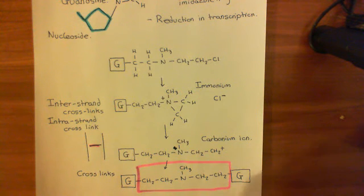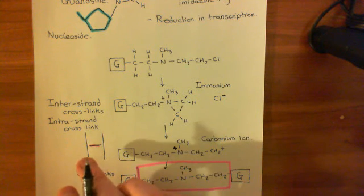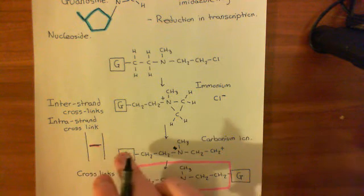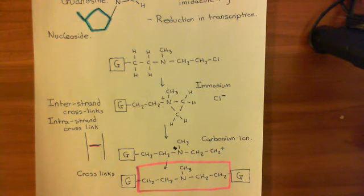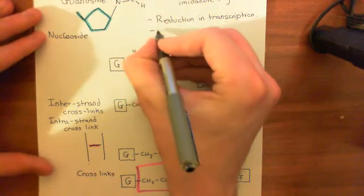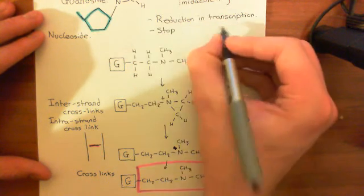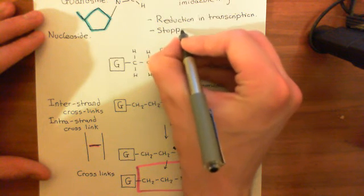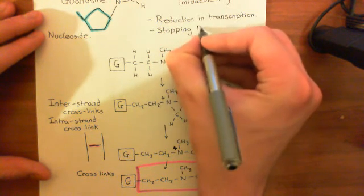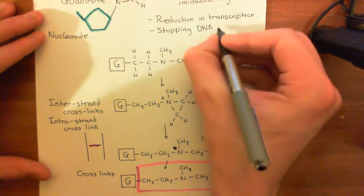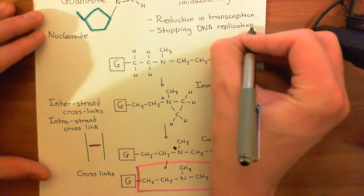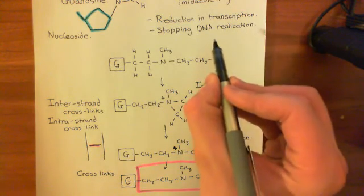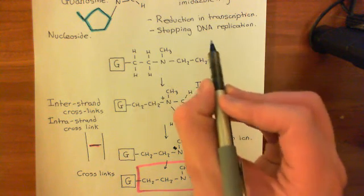What about DNA replication — copying the DNA? For that, again, you need to open the DNA strands, split them apart, and then the DNA polymerase has to work on the two. If you've got this drug molecule linking the two strands together, it's not going to be able to split them apart. So again, it's going to stop DNA replication, and that is interesting. Stopping DNA replication is very interesting, because in order to divide cells, you need to copy the DNA — both daughter cells need a full copy of the genome. So if you stop DNA replication, you stop cell division.